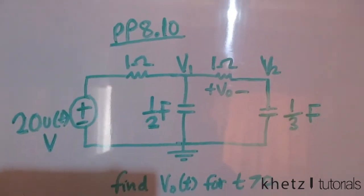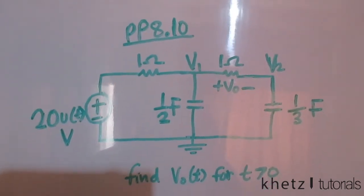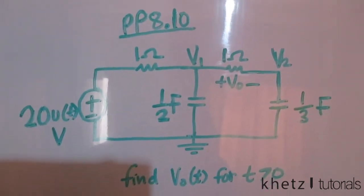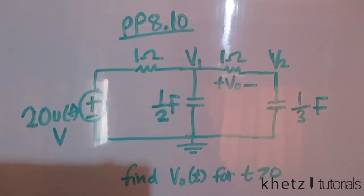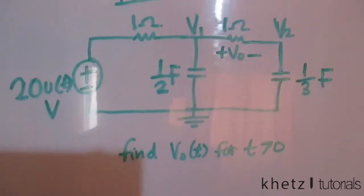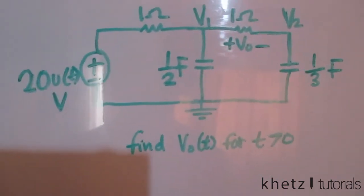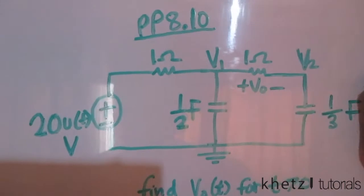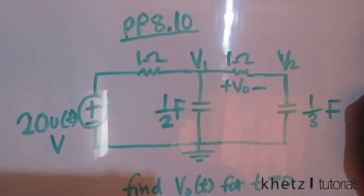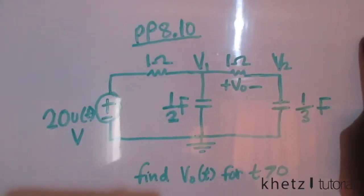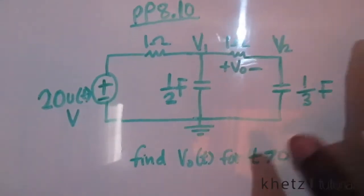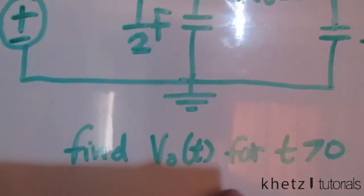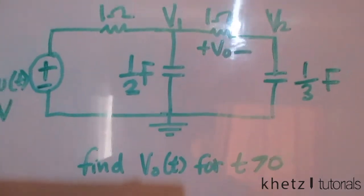Welcome to CAST tutorials. In this video I'll be covering practice problem 8.10. Given the circuit, we are asked to find vo(t) for time greater than zero.